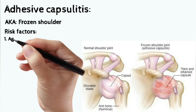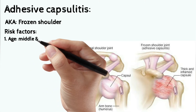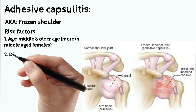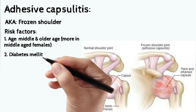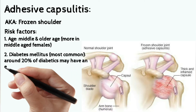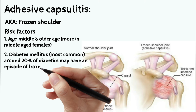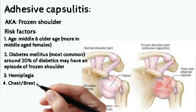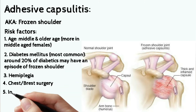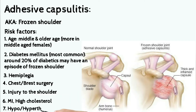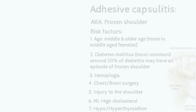Adhesive capsulitis is also known as frozen shoulder. Risk factors include age — middle or older age, more common in middle-aged females. Diabetes mellitus is the most common risk factor, and 20% of diabetics may have an episode of frozen shoulder. Other risk factors include hemiplegia, chest or breast surgery, injury to the shoulder, MI, high cholesterol, and hypo- or hyperthyroidism.